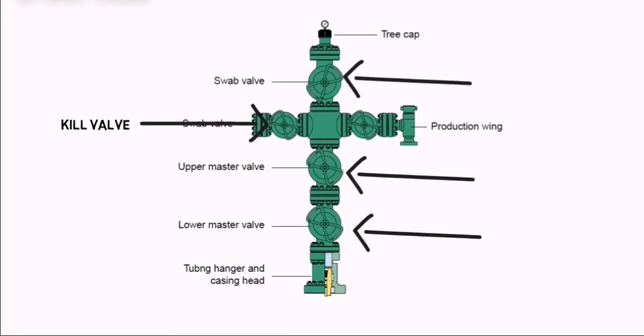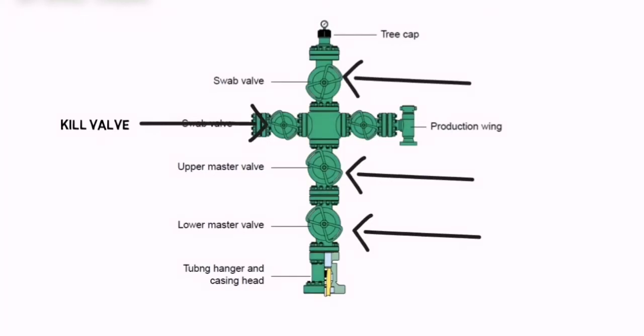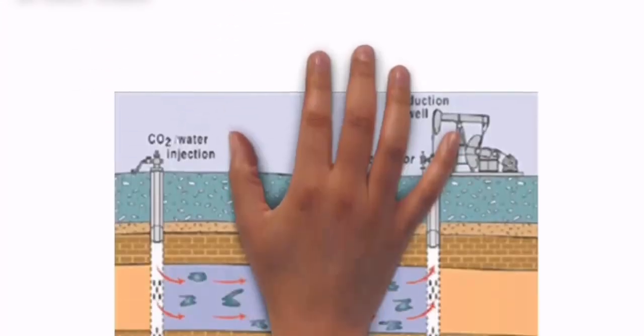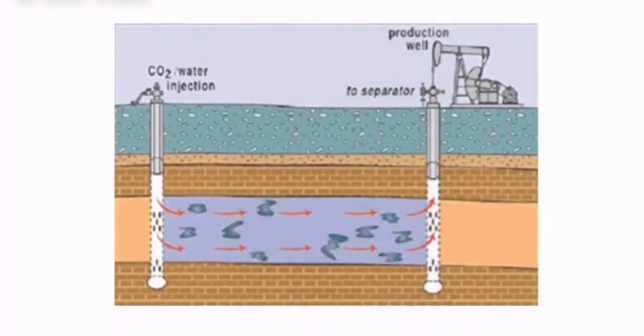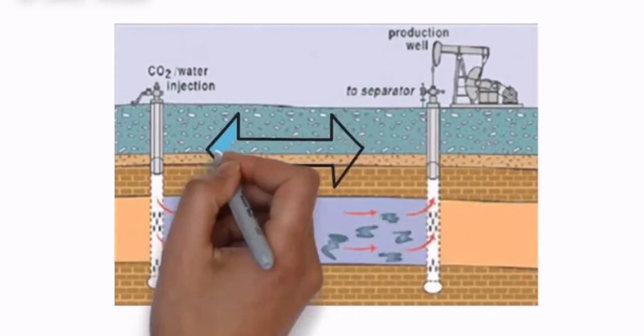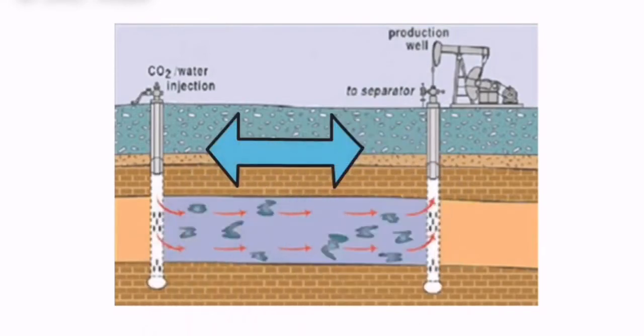Types of wells: Production wells are used to extract the oil from underground. Injection wells are used to inject water or gas inside the reservoir.